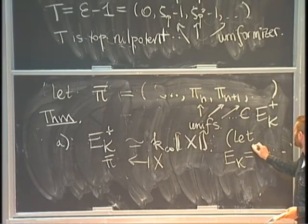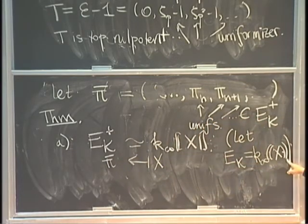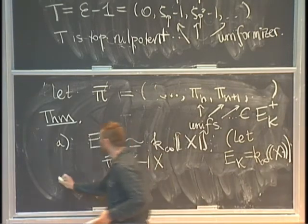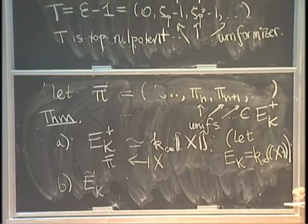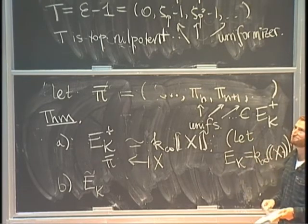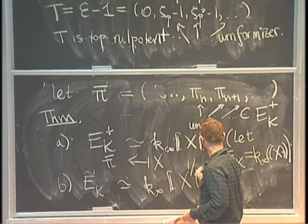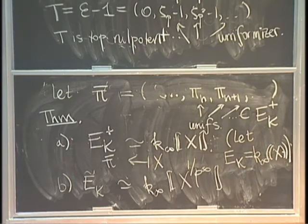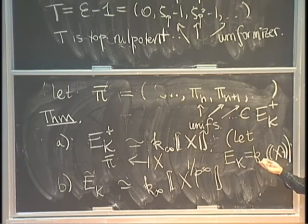Now that we know the thing is a domain, it makes sense to let E_K be its fraction field. The plus indicates bounded or integral elements; without the plus, you invert a uniformizer. I also have Ẽ_K: it's not so hard, given part a, that Ẽ_K is a perfect ring that's complete — just the completion of the perfection of E_K. So this is written as k_∞((x^{1/p^∞})): power series in x where you allow arbitrary p-power roots of x, but the exponents below any given bound are only finitely many.